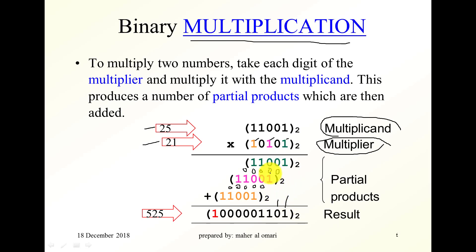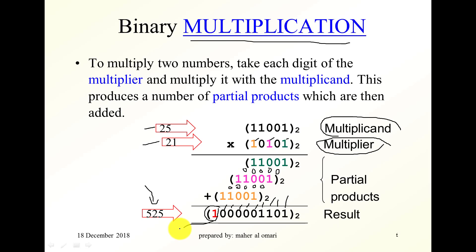Adding the partial products: we get zero, then one, then one and zero is one, one zero one is zero with a carry one, one and one is zero with a carry, continuing through each column with carries. The final carry is one. The result is 1000001101 in binary. Twenty-five multiplied by 21 in decimal is 525, and this is indeed the binary representation — 512 plus 8 plus 4 plus 1 equals 525.